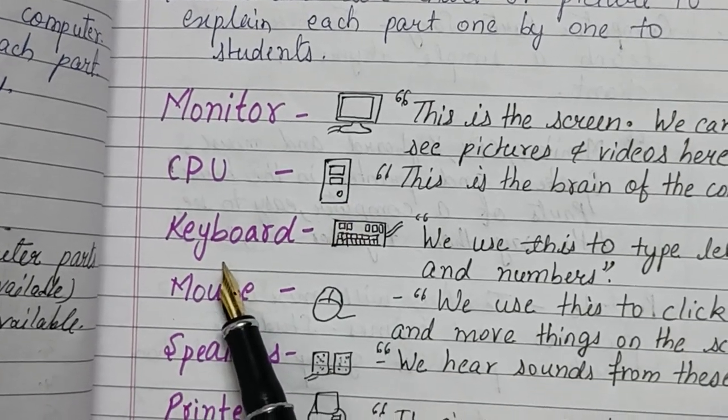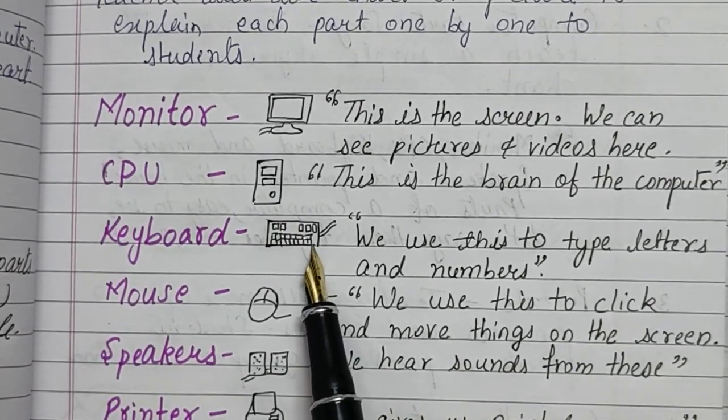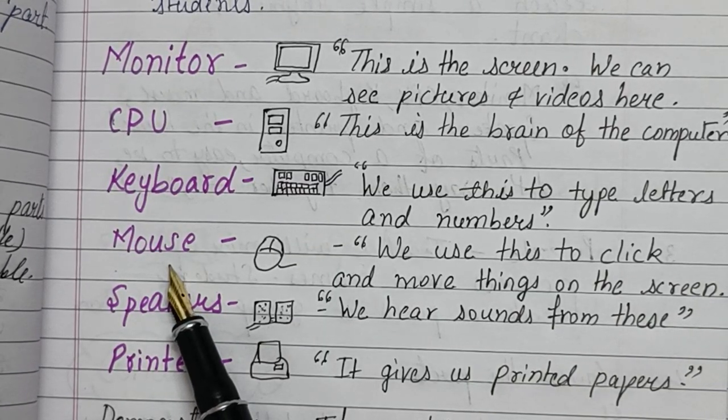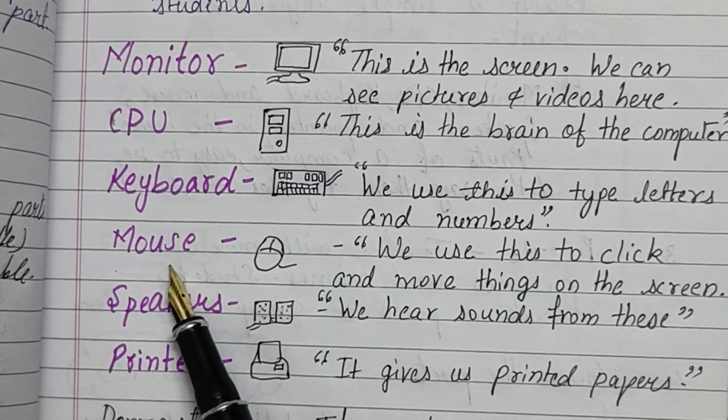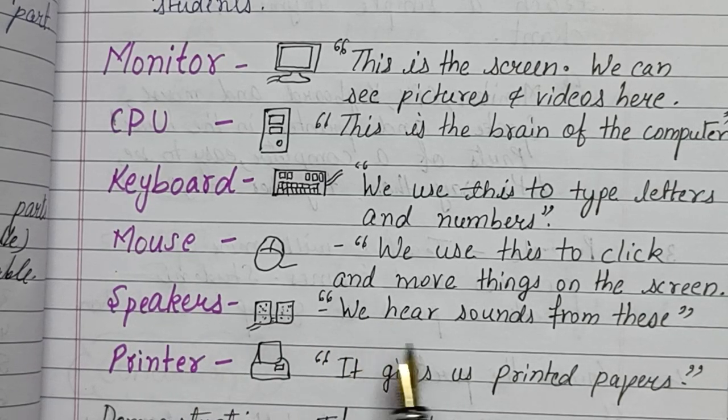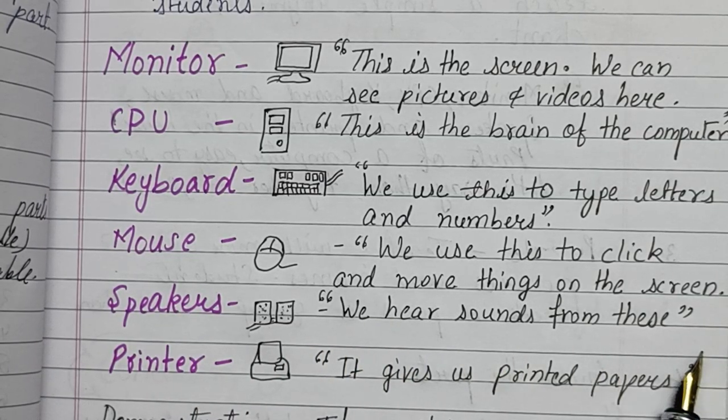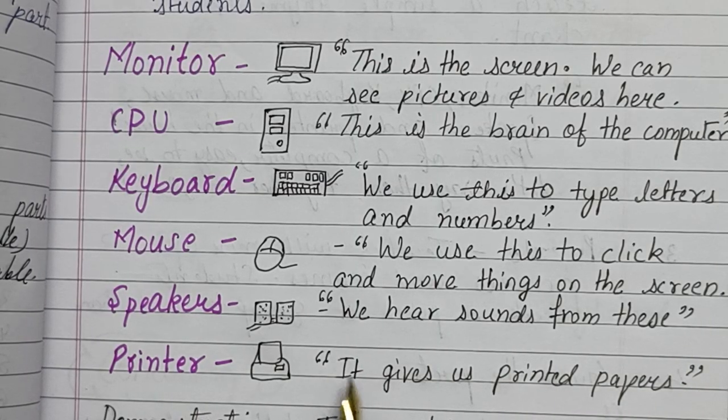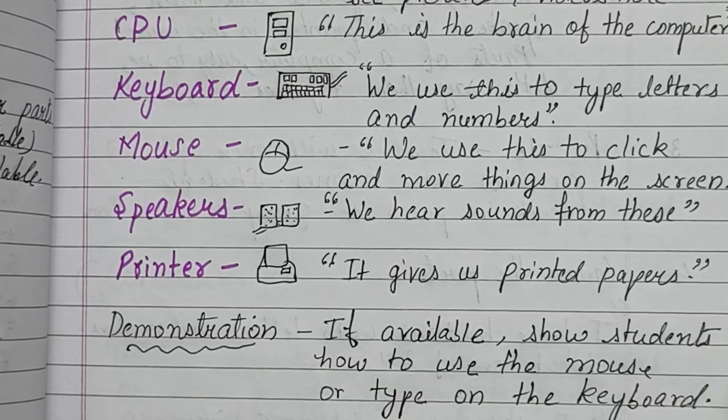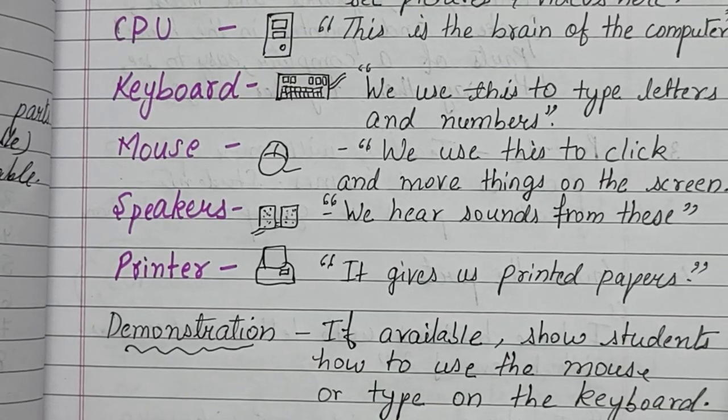Keyboard: we use this to type letters and numbers. Mouse: we use this to click and move things on the screen. Speakers: we hear sound from these. Printer: it gives us printed papers.